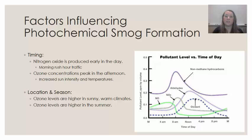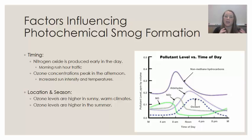Several factors influence when and where photochemical smog is produced. The first factor is timing. Nitrogen oxides are released primarily early in the day, because a lot of people are commuting to work during morning rush hour. The process of converting nitrogen oxide into ozone takes time and requires sunlight, so ozone concentrations — shown as oxidants on the graph — peak in the afternoon once sun intensity increases and temperatures warm up.